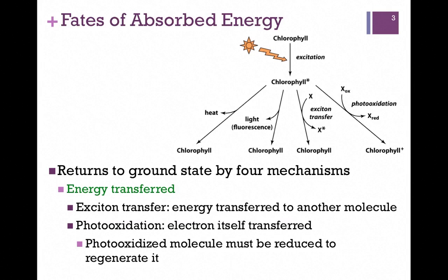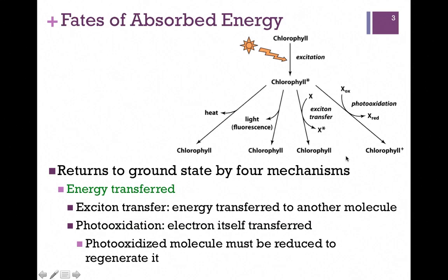Instead, we have two more processes where the energy is actually transferred — we collect it in some way. In the first case, our excited state chlorophyll molecule passes that energy on to some molecule X. Chlorophyll returns to the ground state and X is now in an excited state, denoted by the asterisk. In this case, all that's been transferred is just the energy itself, and that's referred to as exciton transfer.